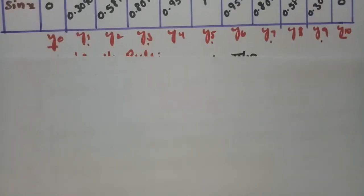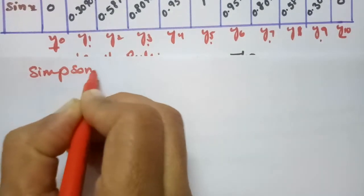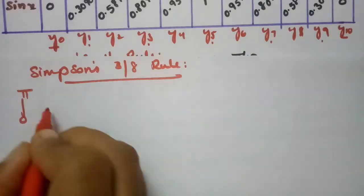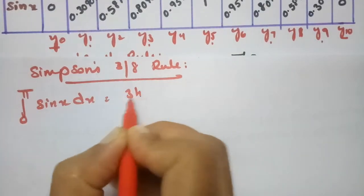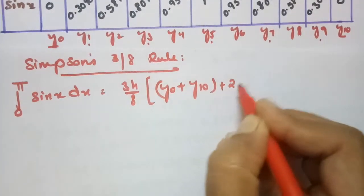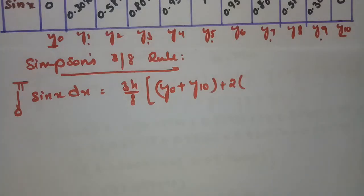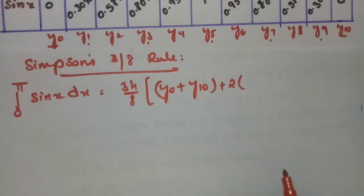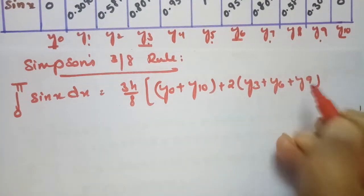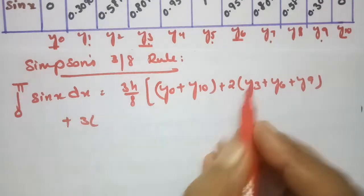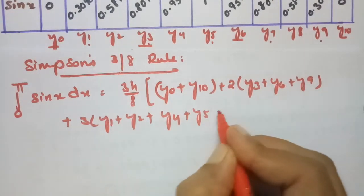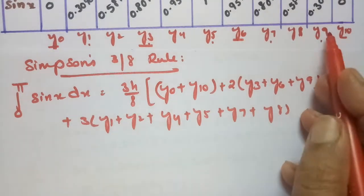Now coming to Simpson's 3/8 rule. According to Simpson's 3/8 rule, the formula is: (3h/8) × [(y0 + y10) + 2(y3 + y6 + y9) + 3(y1 + y2 + y4 + y5 + y7 + y8)], where multiples of 3 are treated separately from the rest.